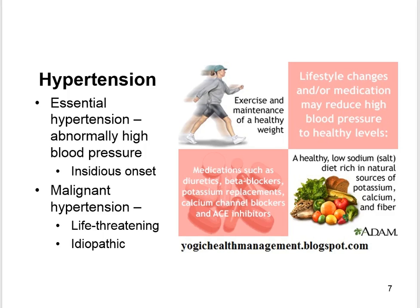Essential hypertension is an abnormally high blood pressure with an insidious onset, greater than 140 over 90 mmHg. Malignant hypertension is life-threatening; it's idiopathic and is the severe form, with a sudden onset and blood pressure greater than or equal to 200 over 120 mmHg. Stress is a major contributing factor in hypertension.